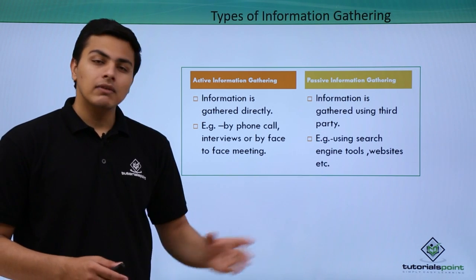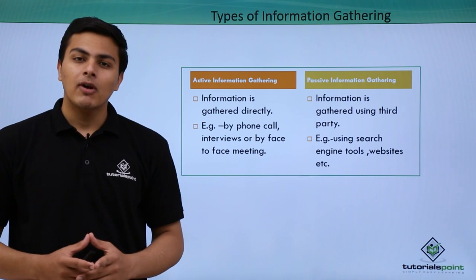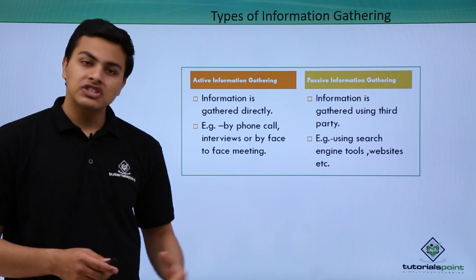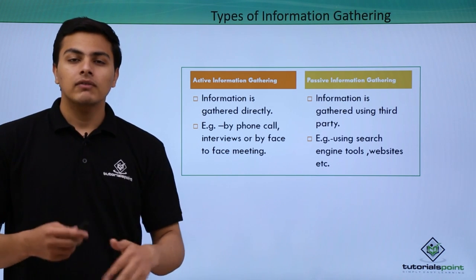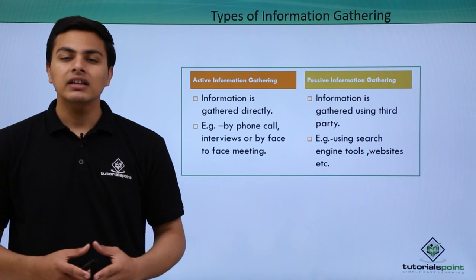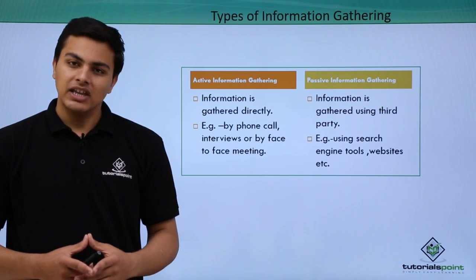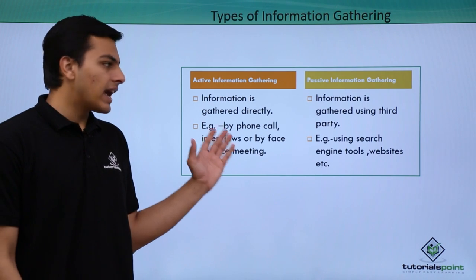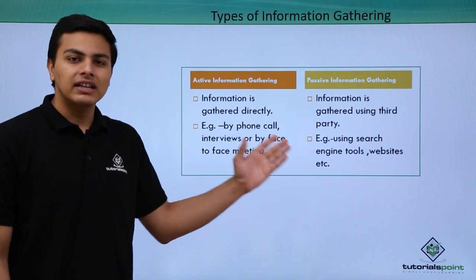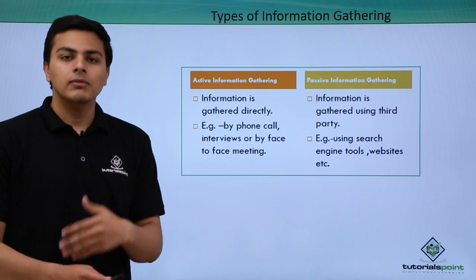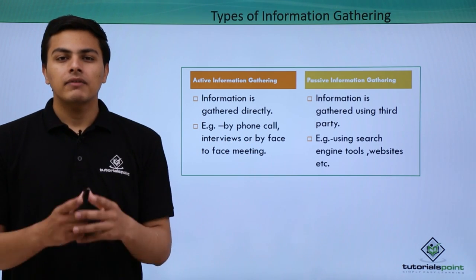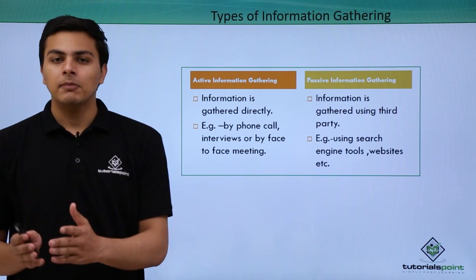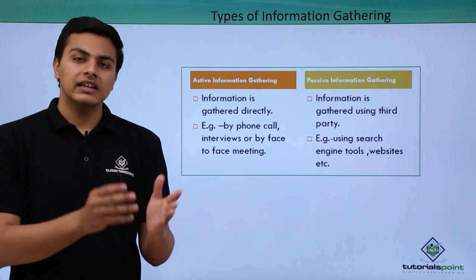Using passive information gathering, we can find information about our targets using search engine tools or even from third-party vendors or web applications. The key difference is that in active we gather information directly, while in passive we gather information using a third party or secretly.